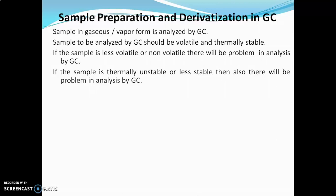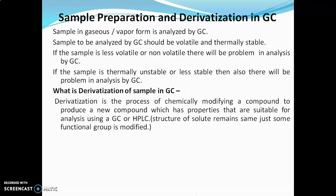The solution is we can go for sample derivatization. Derivatization is the process of chemically modifying a compound to produce a new compound which has properties that are suitable for analysis using GC or HPLC. Derivatization is nothing but the chemical reaction carried out on the sample to convert it into a more suitable form which can be analyzed by GC or HPLC.